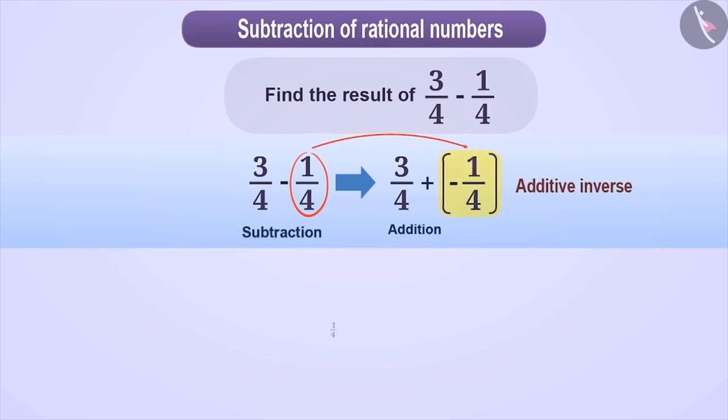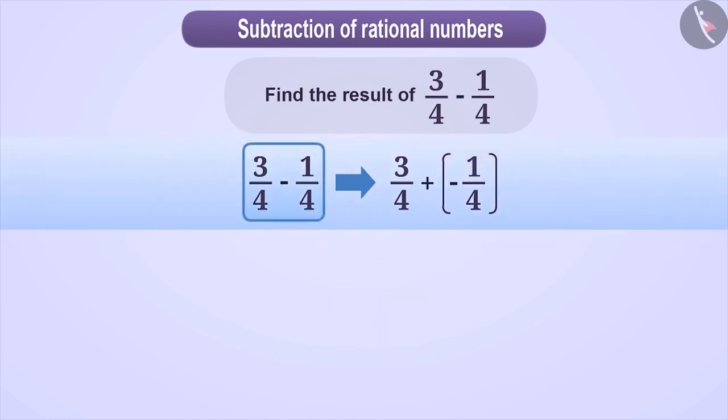The additive inverse of a number is a number that when added to the given number results in 0. Here, the additive inverse of 1/4 is -1/4. Thus, we have converted 3/4 - 1/4 to 3/4 + (-1/4).